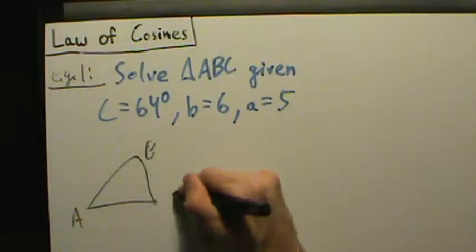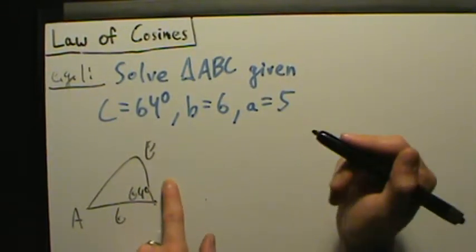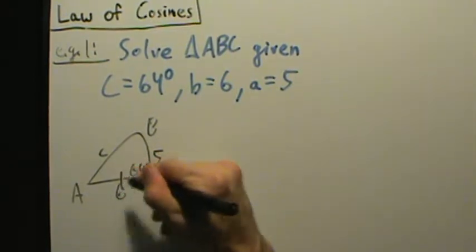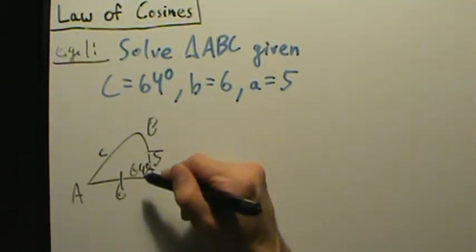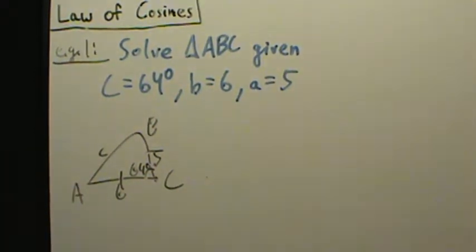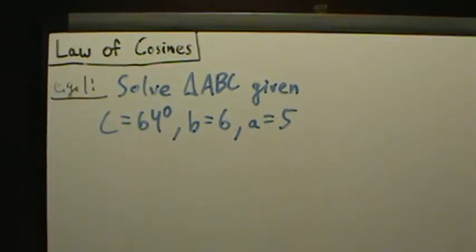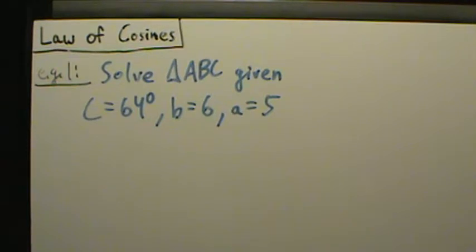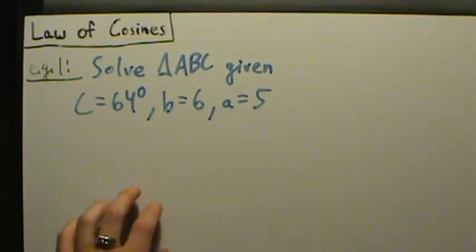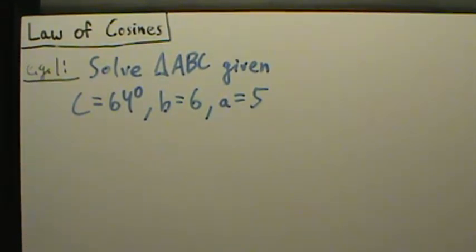So we could draw ABC: this angle is 64 degrees, this side is little b which is 6, this side is little a which is 5, and this side is little c. So what we have is side-angle-side — this is an SAS triangle. That tells us to use the law of cosines. Just make a rough sketch in the beginning if you're not sure which law to use, and then based on the type of triangle and the information given, you can determine whether to use the law of cosines or law of sines.